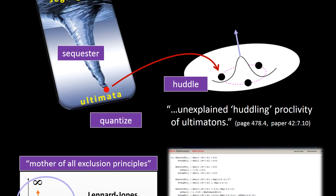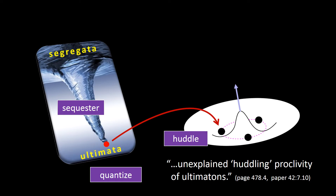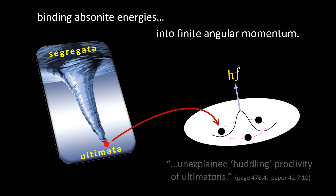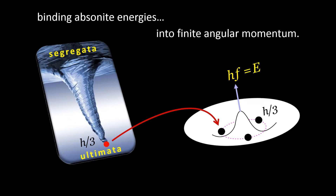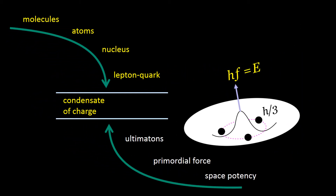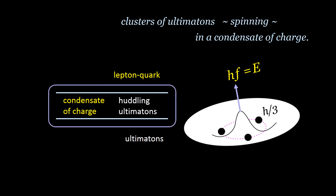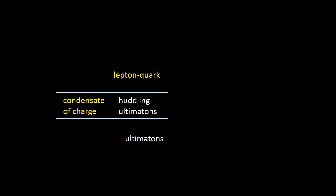It's these two characteristics of ultimatons — their quantized superfluid spin and their proclivity to huddle — that allow us to make contact with standard model physics. What we have here is the binding of near-absonite energies into finite angular momentum, and angular momentum is something that science can measure. So this region of interest will contain not isolated ultimatons, but clusters of them huddling. Notice what we have: clusters of ultimatons spinning in a condensate of charge. This extraordinary place where spin gets tangled up with charge becomes the perfect place for revelation to make first contact with native science.